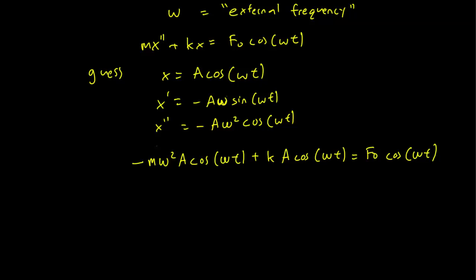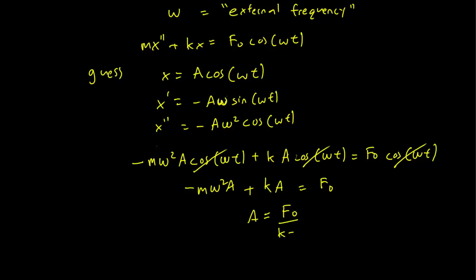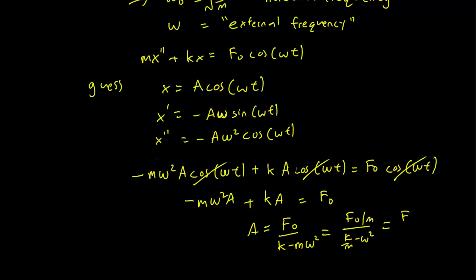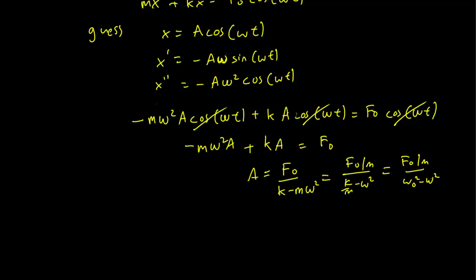Plugging this into the equation, we can cancel out all the cosines from all sides. We get the coefficient A in terms of the system parameters. Since we defined k over m as omega0 squared, this simplifies to A equals F0/m divided by (omega0 squared minus omega squared).